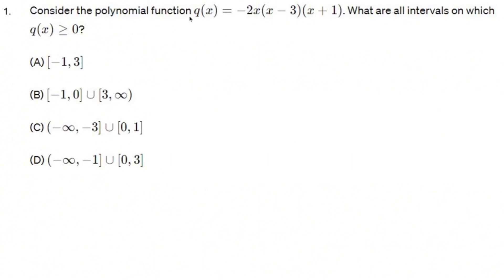Consider the polynomial function q(x) = -2x(x-3)(x+1). What are all intervals on which q(x) is greater than or equal to zero? So what I need to do is imagine what the graph of this looks like and imagine where the graph would be positive or above the x-axis.